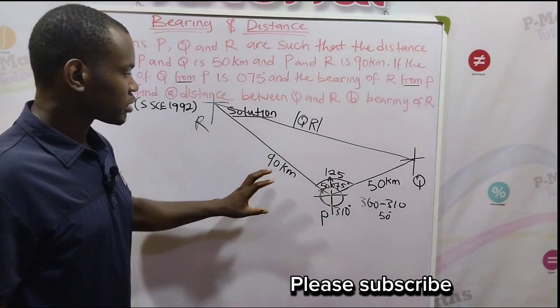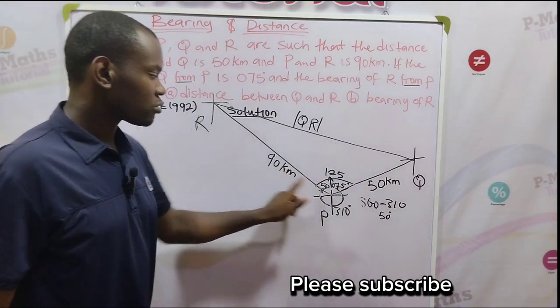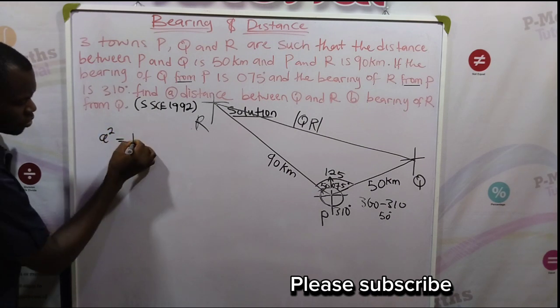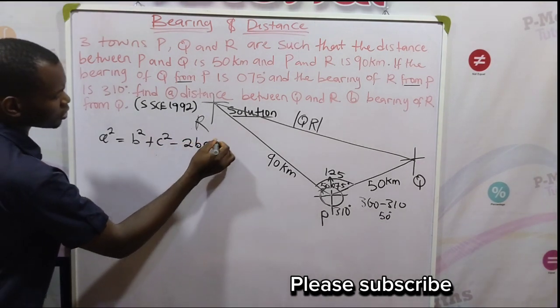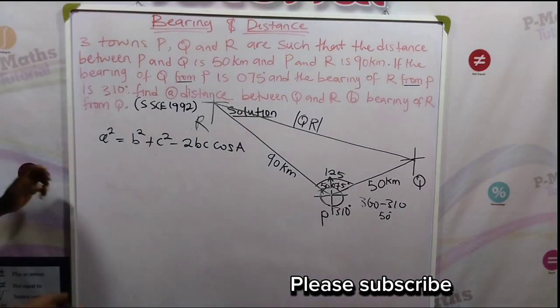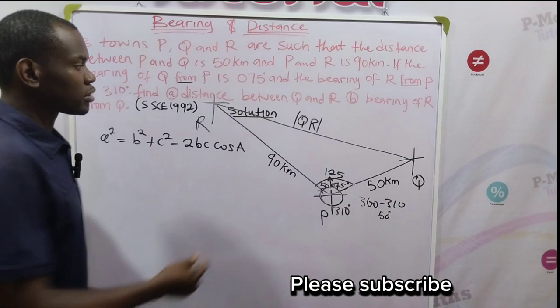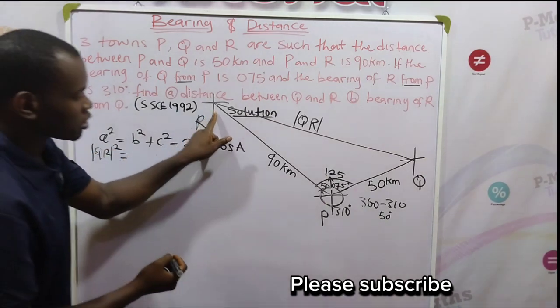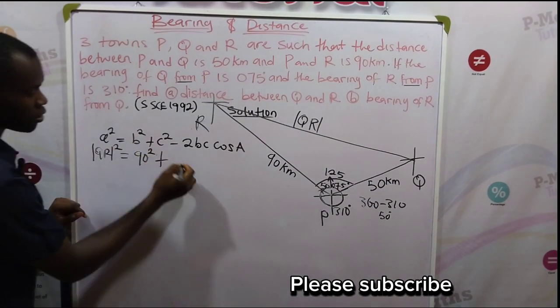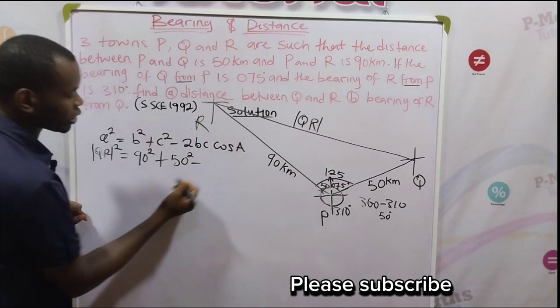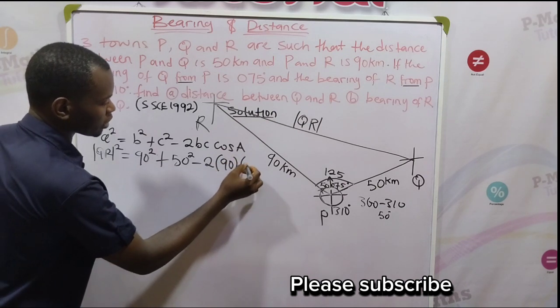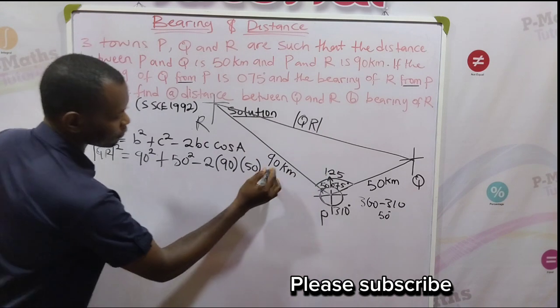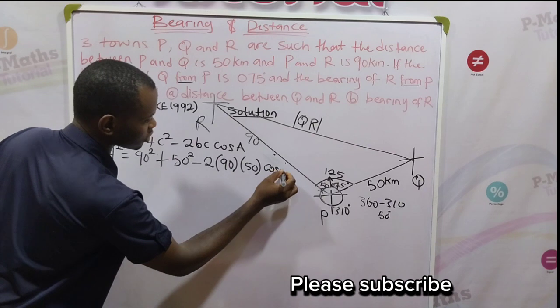So what we are looking out for is this length. So we are going to make use of this angle and these two sides to find this length. Now making use of cosine rule. Cosine rule states that A squared is equal to B squared plus C squared minus 2BC cos A, capital letter A. So we are going to substitute the letterings on this diagram. This is the distance we are looking for, so I will substitute here as QR squared equals 90 squared plus 50 squared minus 2 times 90 times 50 cos 125.